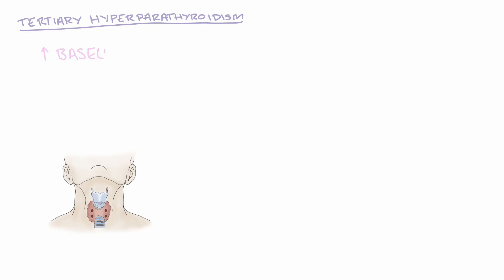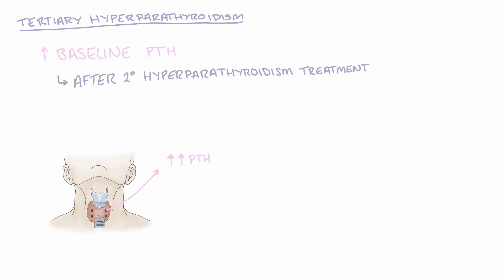Tertiary hyperparathyroidism is where baseline levels of parathyroid hormone remain inappropriately high after successful treatment of secondary hyperparathyroidism, and this leads to hypercalcemia. This occurs because during secondary hyperparathyroidism there is hyperplasia of the parathyroid glands. After treating secondary hyperparathyroidism — either by replacing vitamin D or commencing dialysis — the parathyroid glands should begin to reduce in size and therefore release less parathyroid hormone.